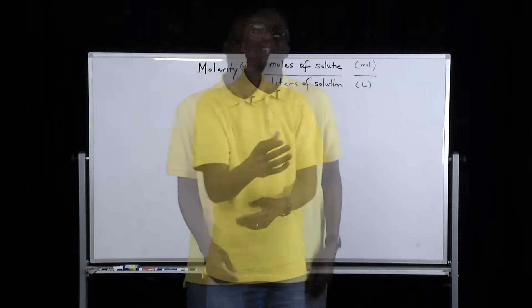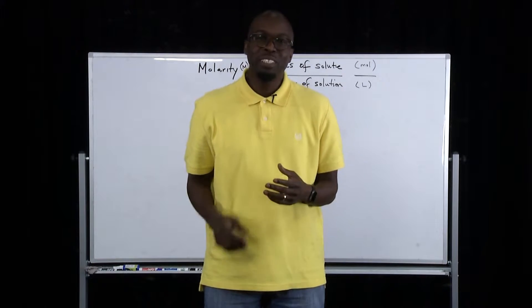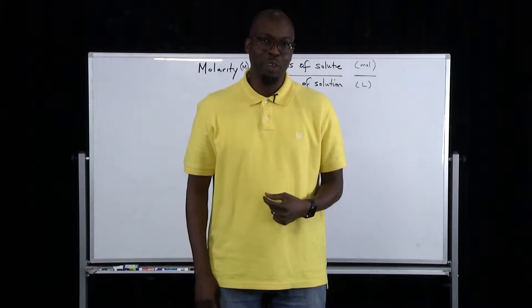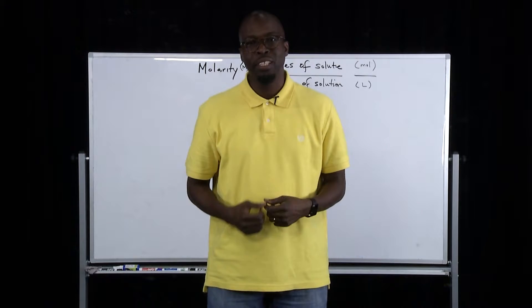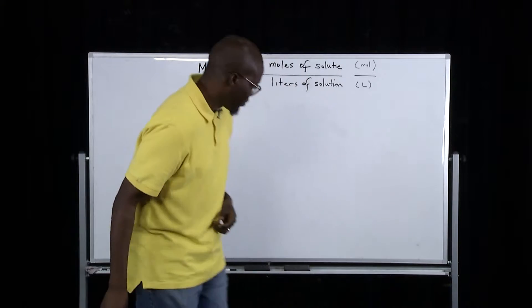For our problem, the question reads as follows. What's the molarity of a solution prepared by dissolving 47 grams of potassium chloride in enough water to give 375 milliliters of solution?